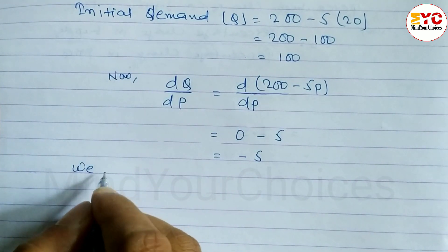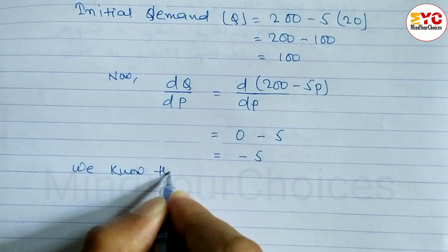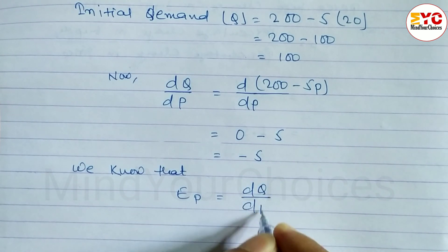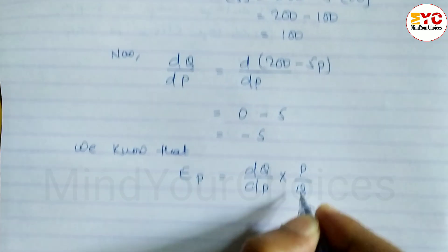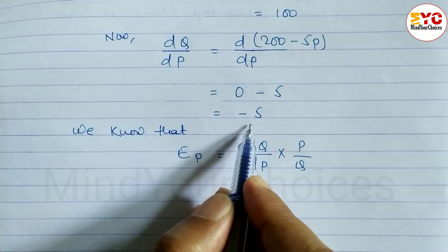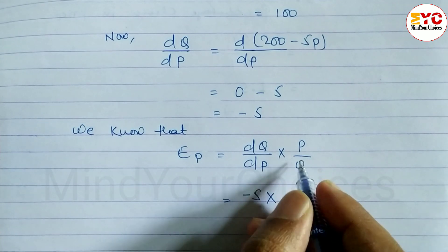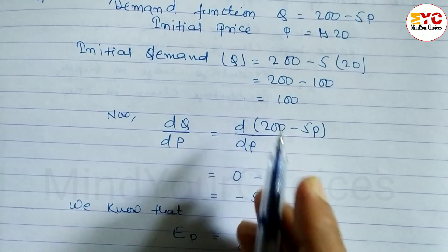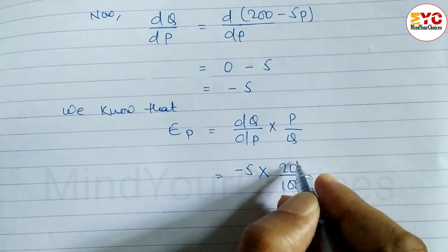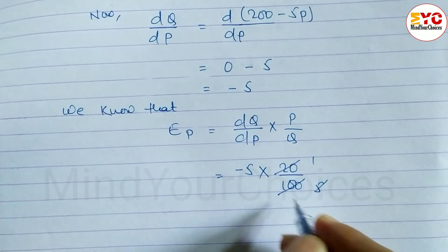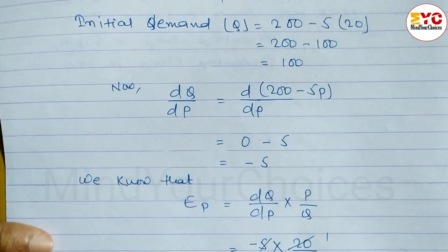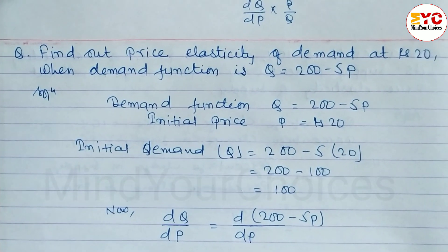Now we apply the formula. Price elasticity of demand ep = (dq/dp) times (p/q). Substituting the values: dq/dp = minus 5, p = 20, and q = 100. So ep = minus 5 times (20/100). Simplifying: 20 and 100 cancel to give 1/5, and minus 5 times 1/5 = minus 1. Therefore, price elasticity of demand equals minus 1.